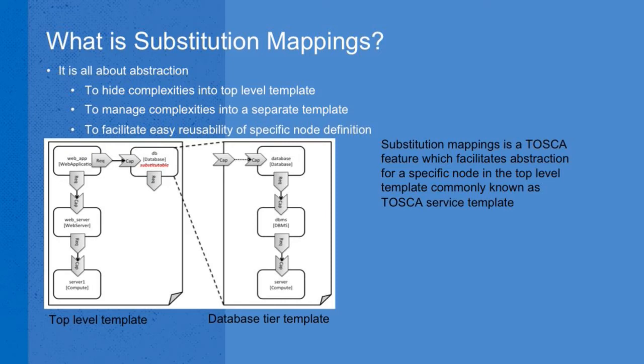What is Substitution Mapping? You will have different applications running in your cloud — say a web application and a database. Instead of writing all the details about different applications in a single template, Substitution Mapping lets you write the database in one template and import it into a parent template. You give the parent template to TOSCA Parser or Heat Translator, which handles both templates.